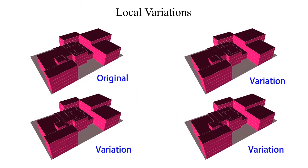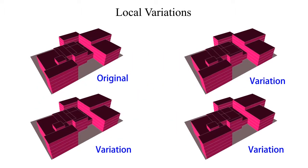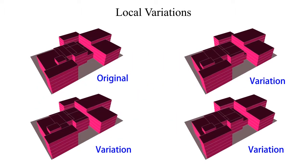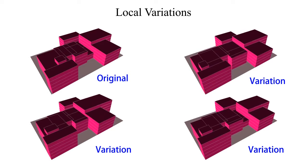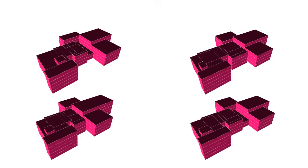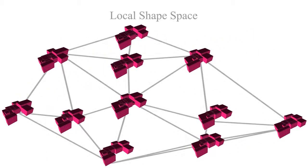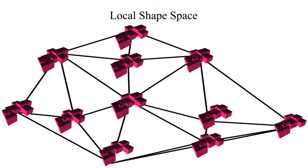From each such good layout, we characterise a family of good layouts using intrinsic deformations to span a local shape space. We expose such a local shape space using a 2D navigation polygon.